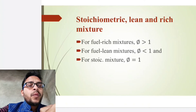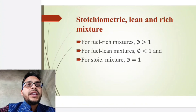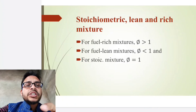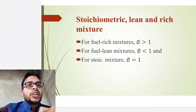For a stoichiometric mixture, φ is equal to 1. This means that if exactly the stoichiometric quantity of oxidizer is supplied, then the fuel-air mixture is said to be stoichiometric.